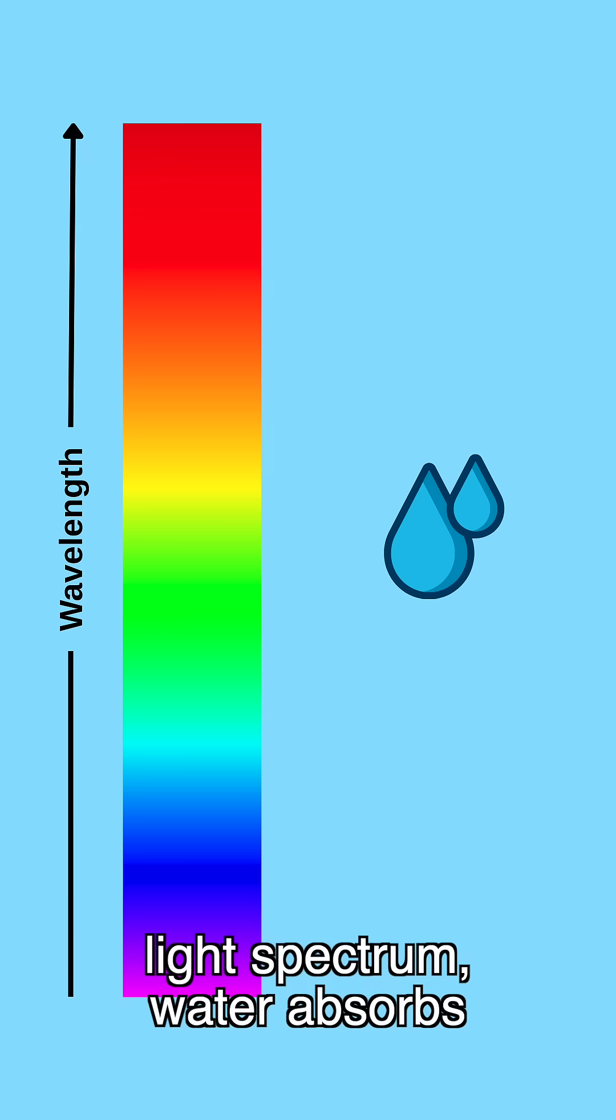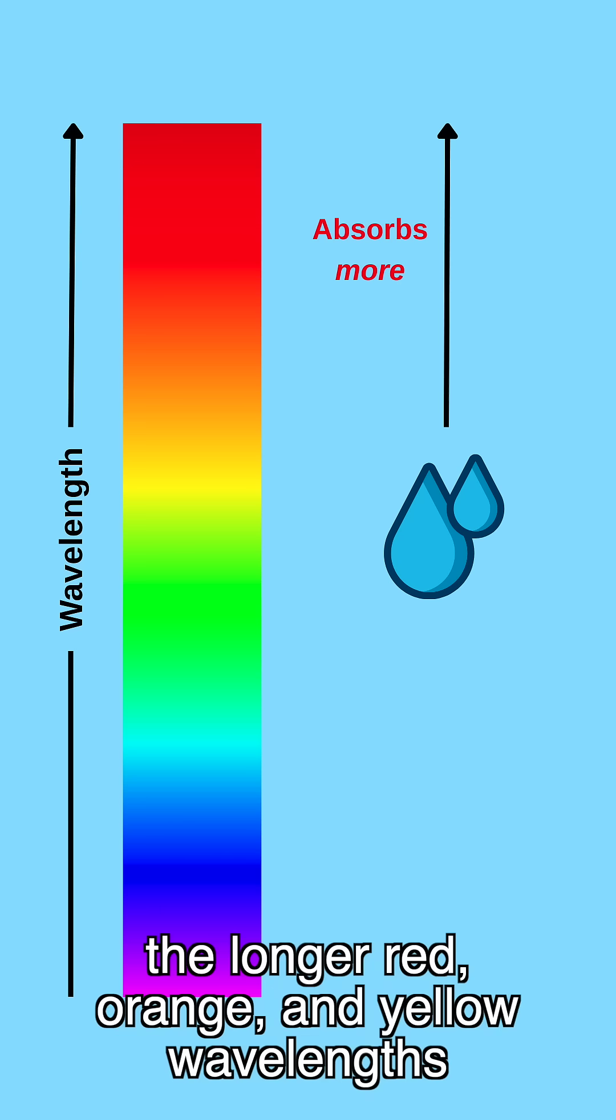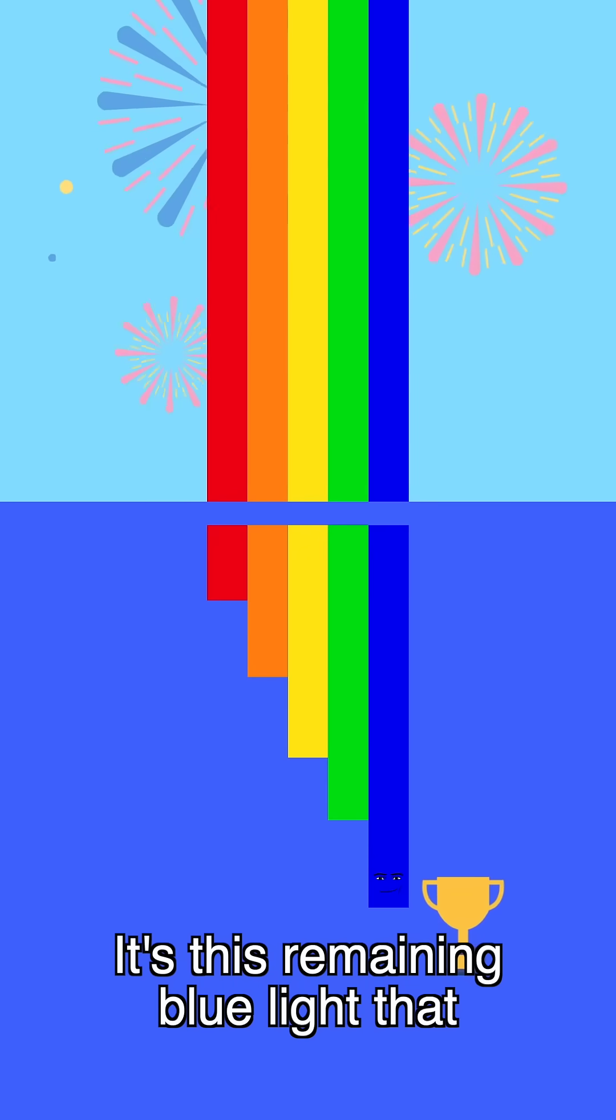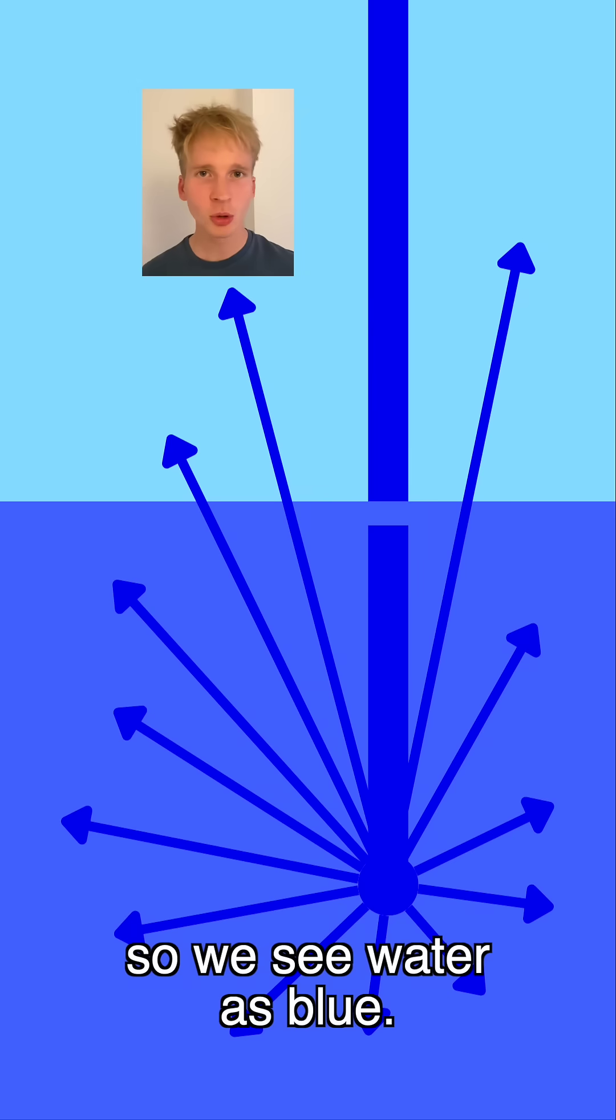Of the colours of the visible light spectrum, water absorbs the longer red, orange and yellow wavelengths more than the shorter blue wavelengths. It essentially removes the red, orange and yellow, and a bit of green light, while the blue wavelengths survive the absorption. It's this remaining blue light that scatters and reaches our eyes, so we see water as blue.